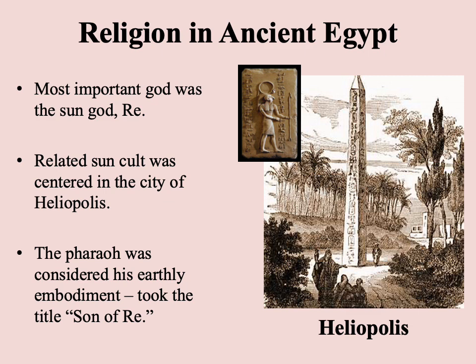Ra becomes a very prominent god during the Middle Kingdom, related to which the city of Heliopolis — that's its Greek name, and the Greeks were familiar with ancient Egypt — a very important sun cult dedicated to him will develop in this city.